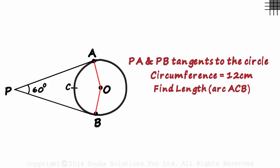Let's see. We know that the radii to the points where the tangents meet the circle are always perpendicular to the tangents. So both these angles will be right angles.